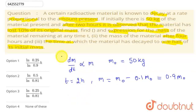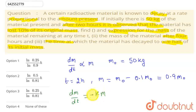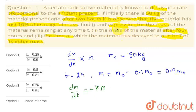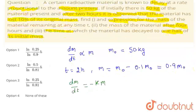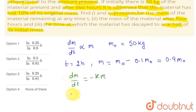From this equation, we can write dm/dt, removing the proportional sign, is equal to minus km, where k is the proportionality constant. I have taken the minus sign because the decay rate is negative — as time increases, mass decreases. Now, to find this expression at any time t, I have to integrate this equation.